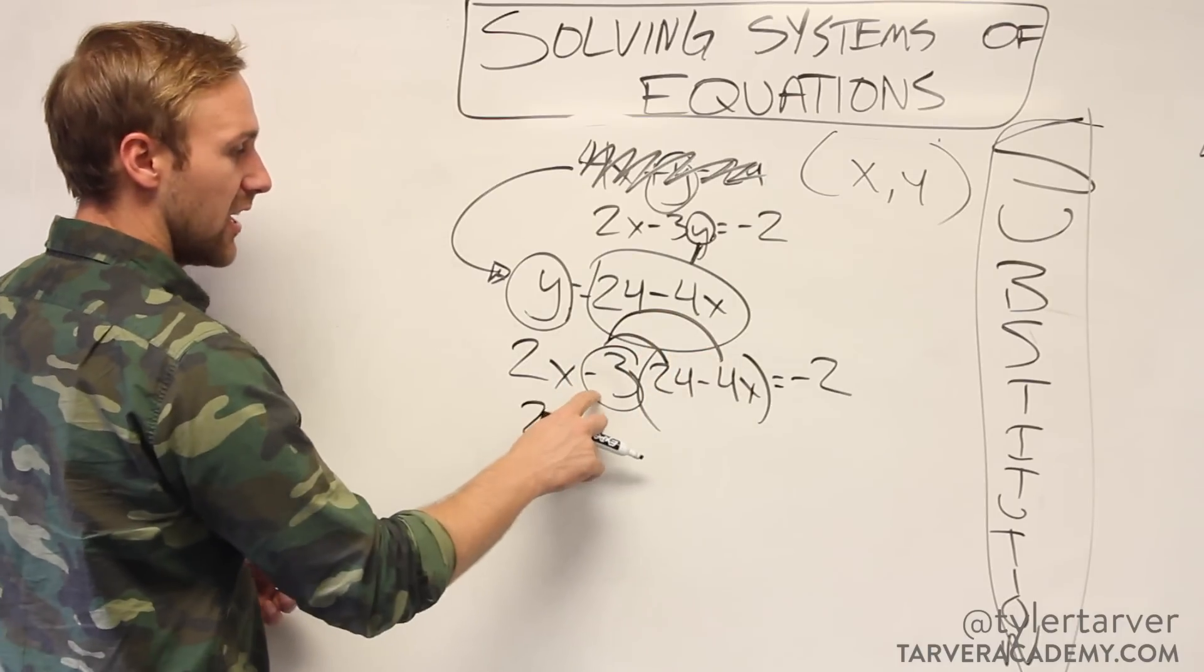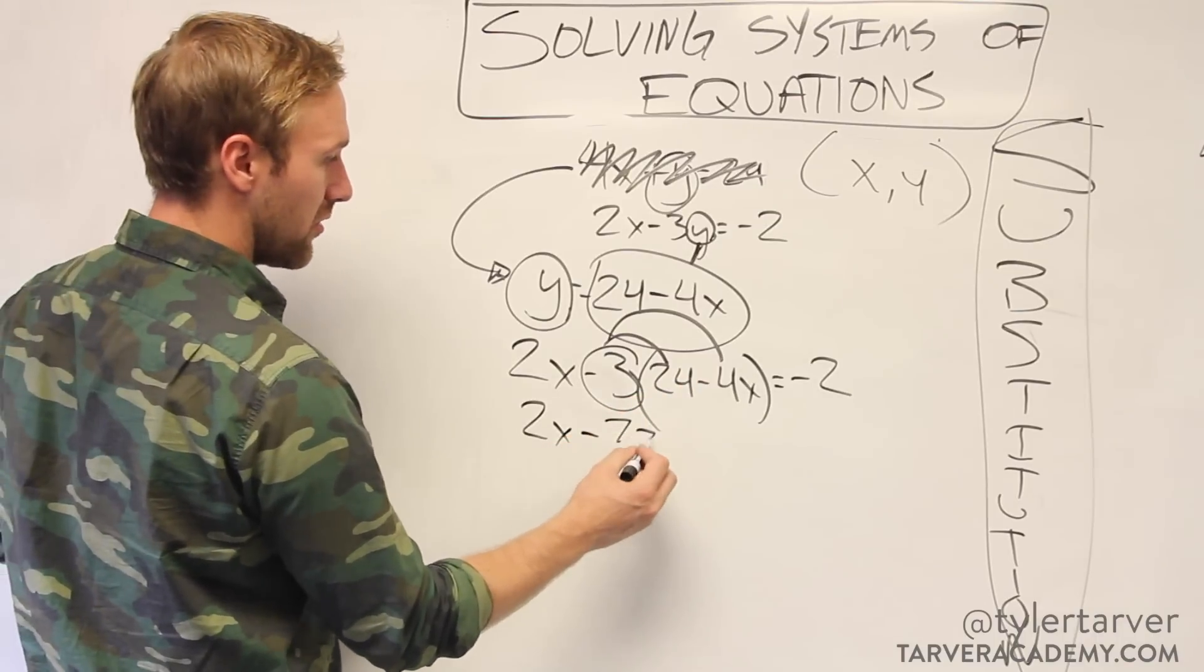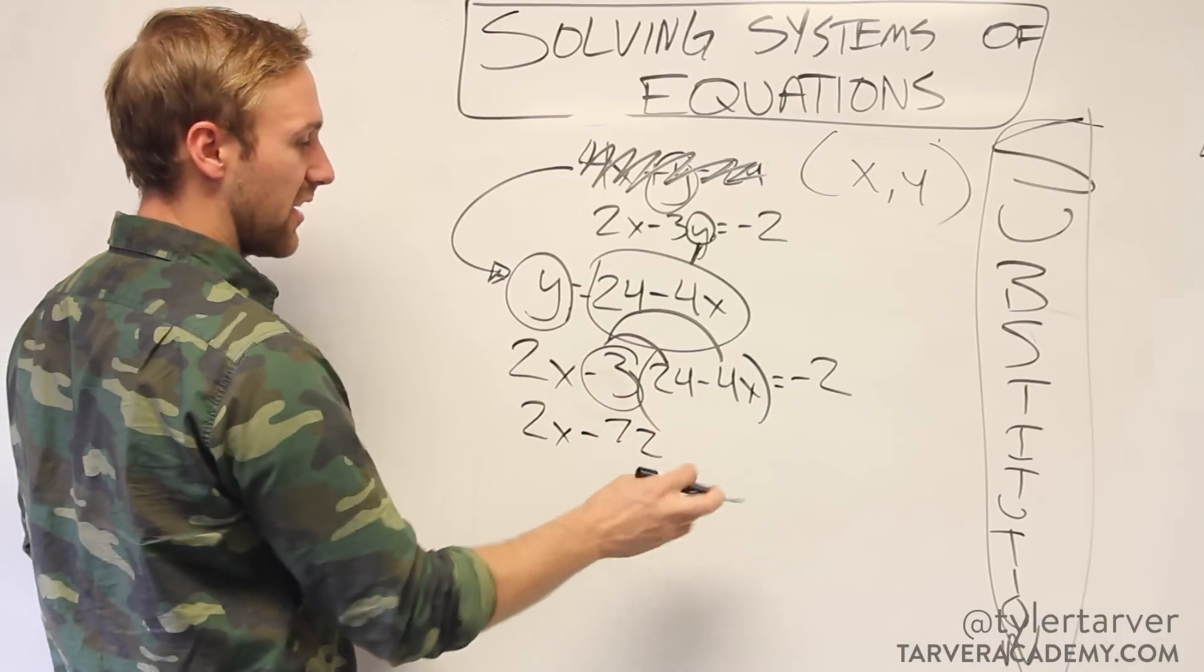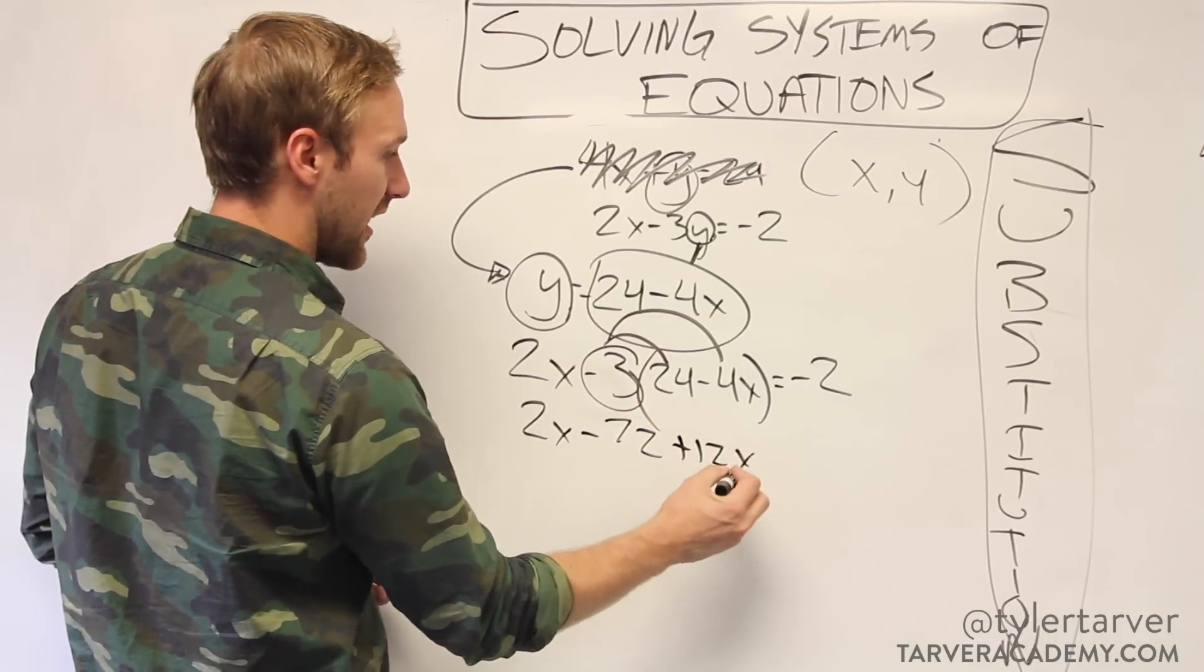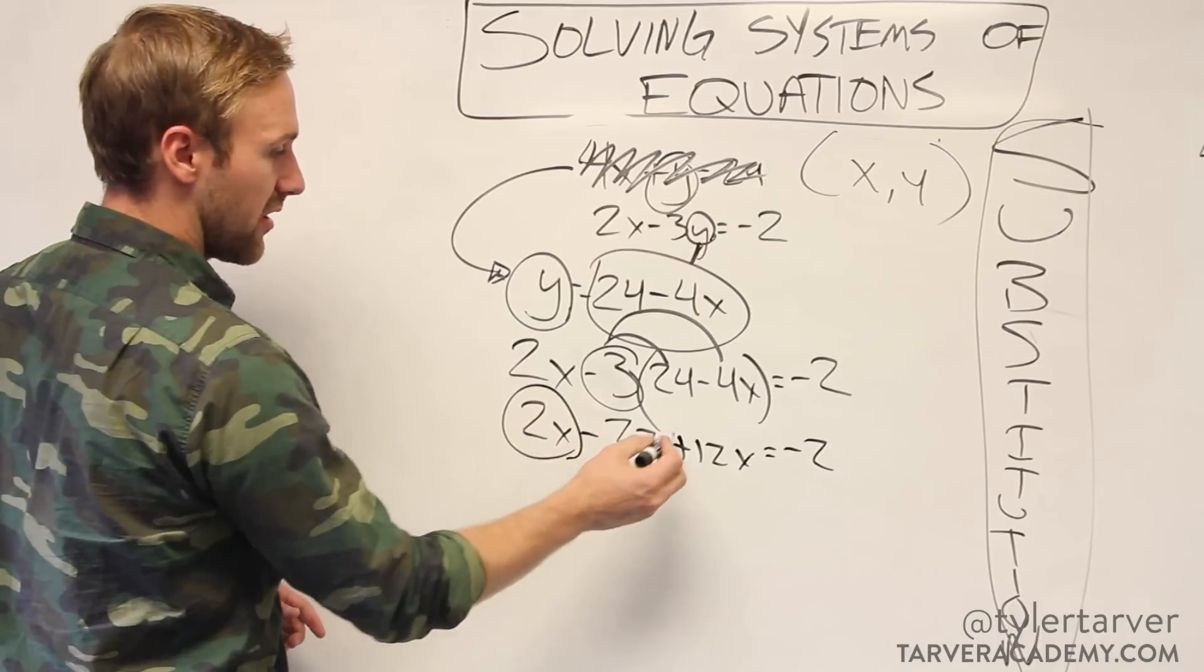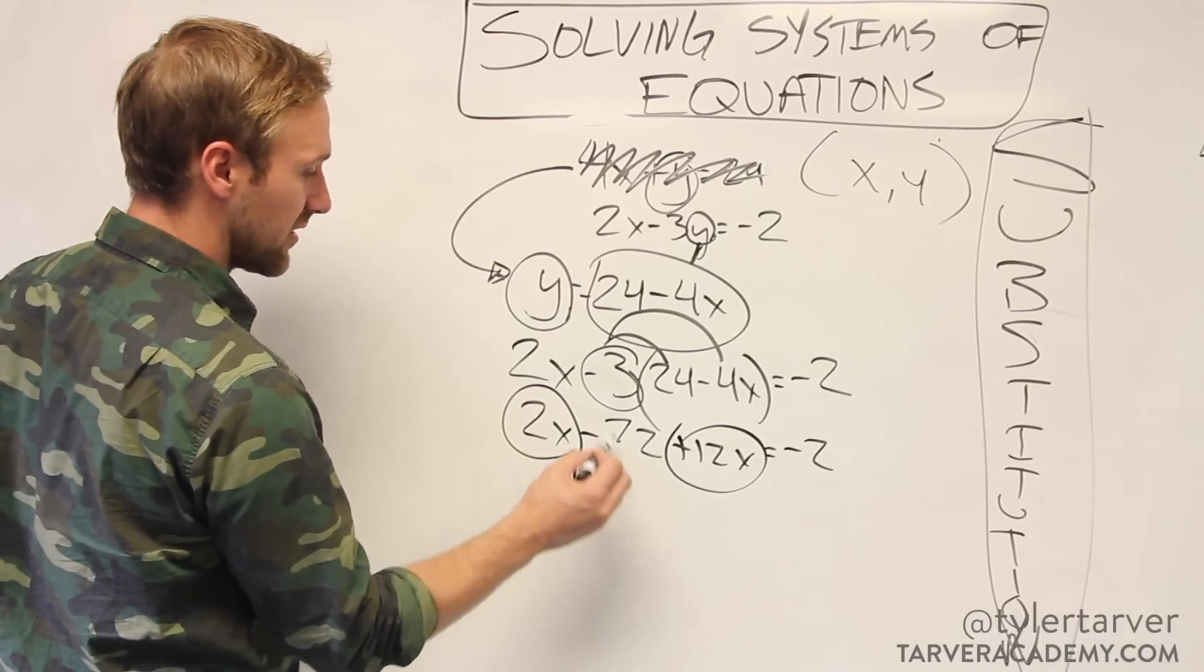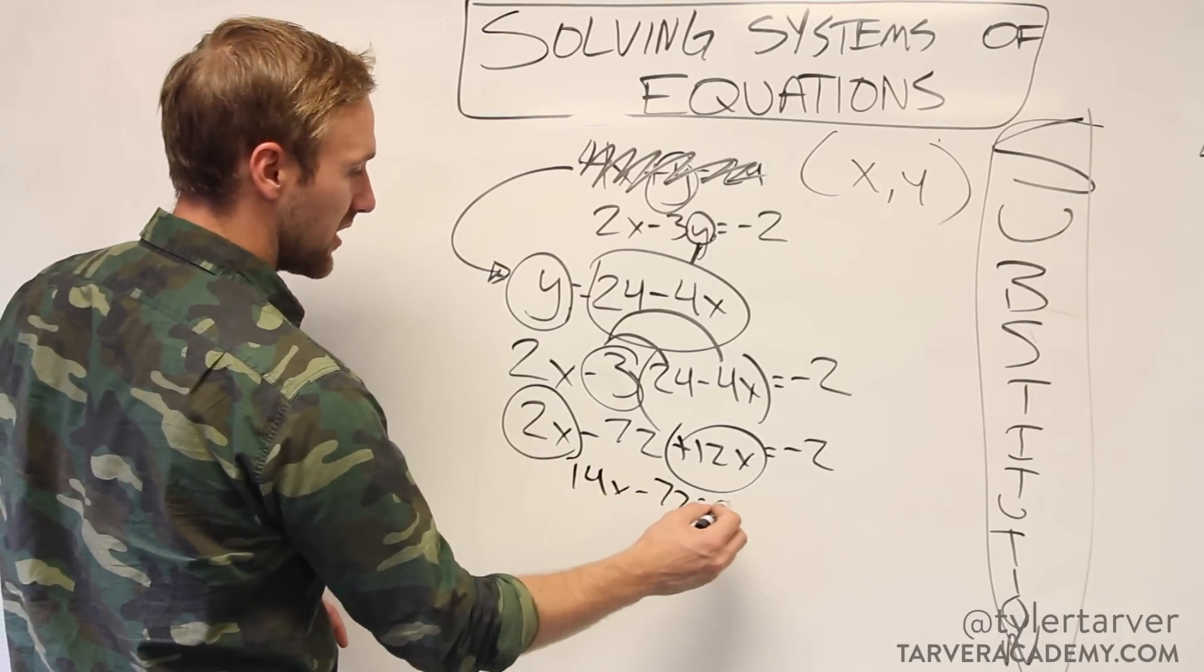So now I've got 2x and then negative 3 times 24, which is 72. And then negative 3 times negative 4, which is positive 12x equals negative 2. Now I want to combine my like terms that are on the same side of the equal sign. 2x plus 12x is 14x minus 72 equals negative 2.